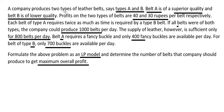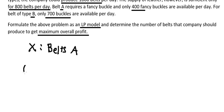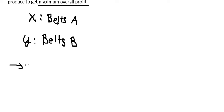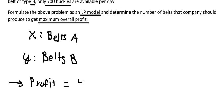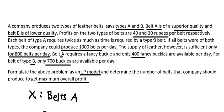Let X be the number of belt type A and Y be the number of belt type B. The first thing we need is the profit function. Since we have 40 and 30 per unit, the profit function is: Z = 40X + 30Y.